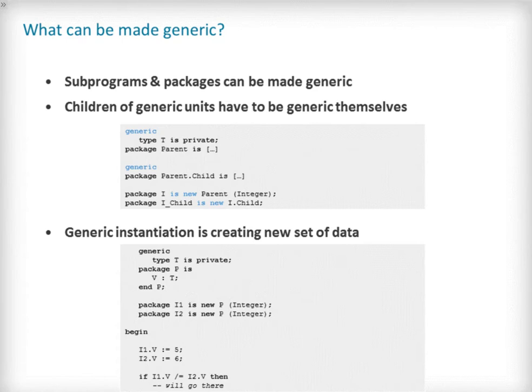There is a simple restriction that children of generic units must also be generic in themselves. The top code snippet on this slide shows a generic package called parent with a parameter T and the parent.child package that is also identified as generic. The code then goes on to instantiate the parent and child generic packages. It's important to remember that each instantiation of a generic unit creates a completely new set of data, and there is no connection between the data in one instance and that of another.